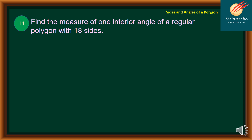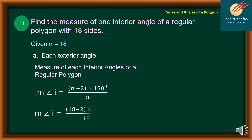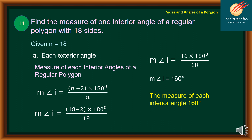Problem number 11: find the measure of one interior angle of a regular polygon with 18 sides. N equals 18. Using the formula (N − 2) × 180 divided by N, we substitute to get (18 − 2) × 180 divided by 18, which is 16 × 180 divided by 18. Each interior angle equals 160 degrees.